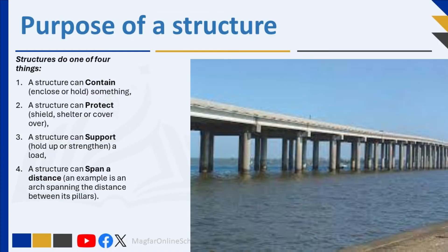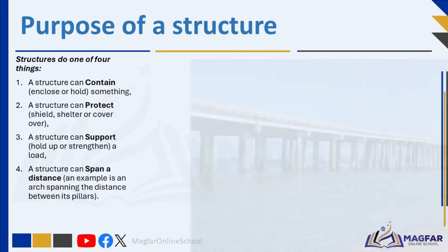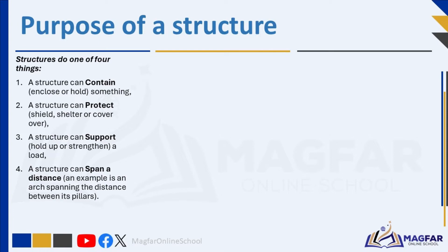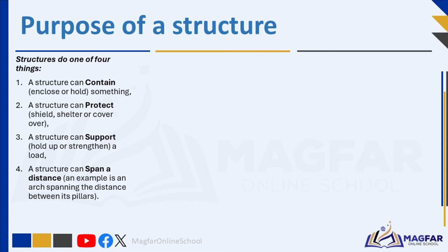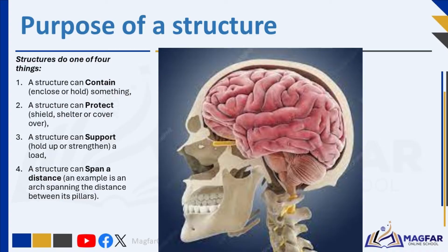A structure comprises several components which are called members or parts that create a framework. Structures do one of four things. First, a structure can contain, enclose, or hold something. Second, a structure can protect, shield, shelter, or cover over.